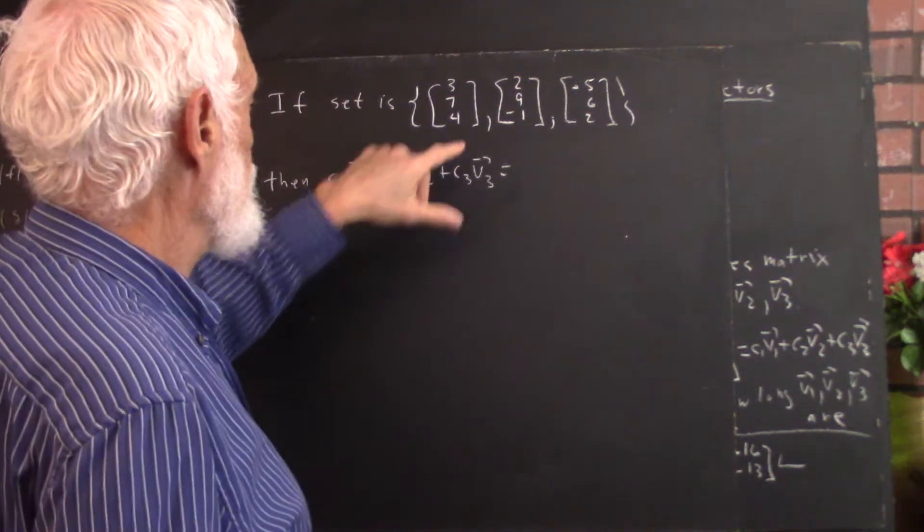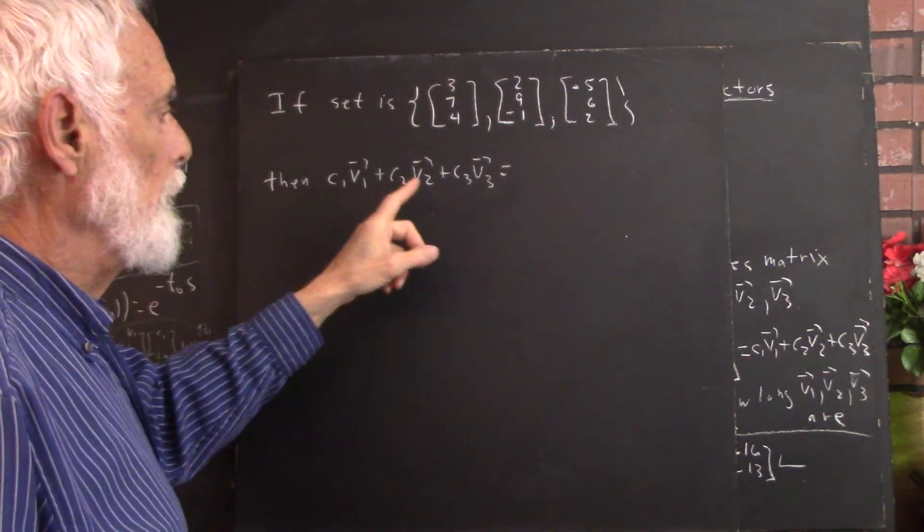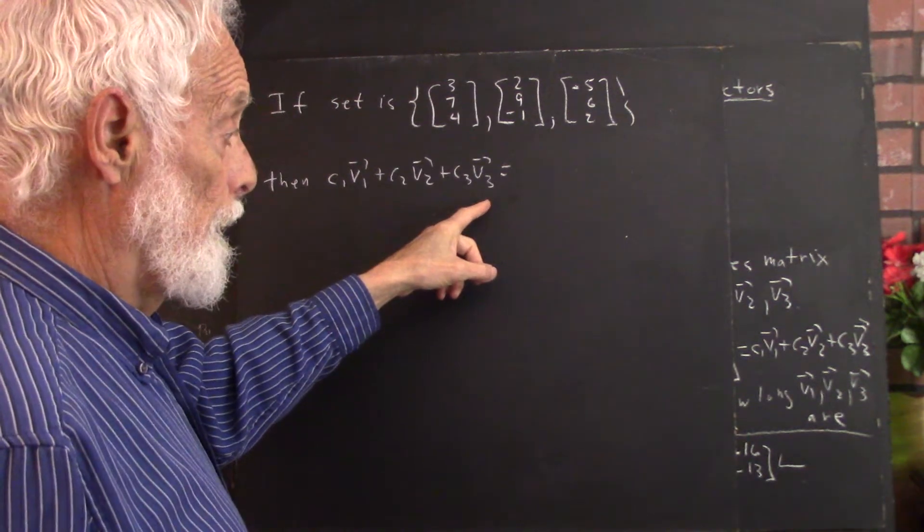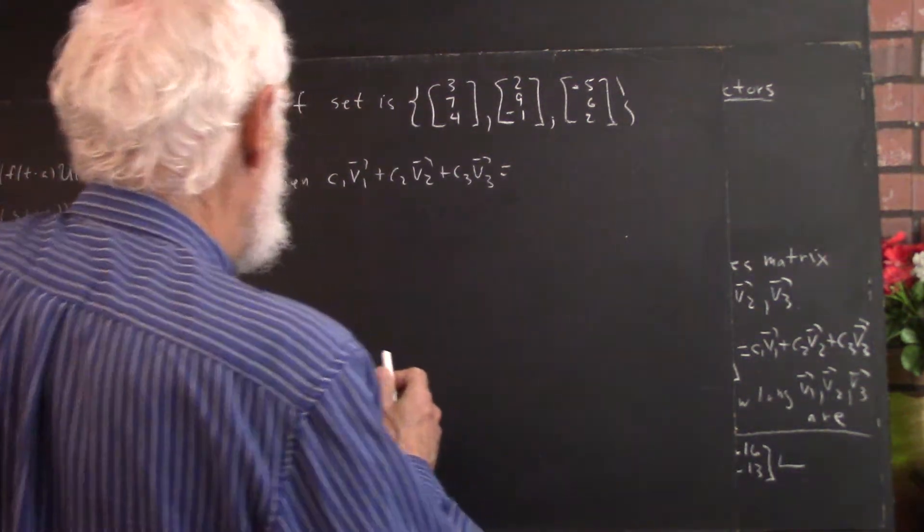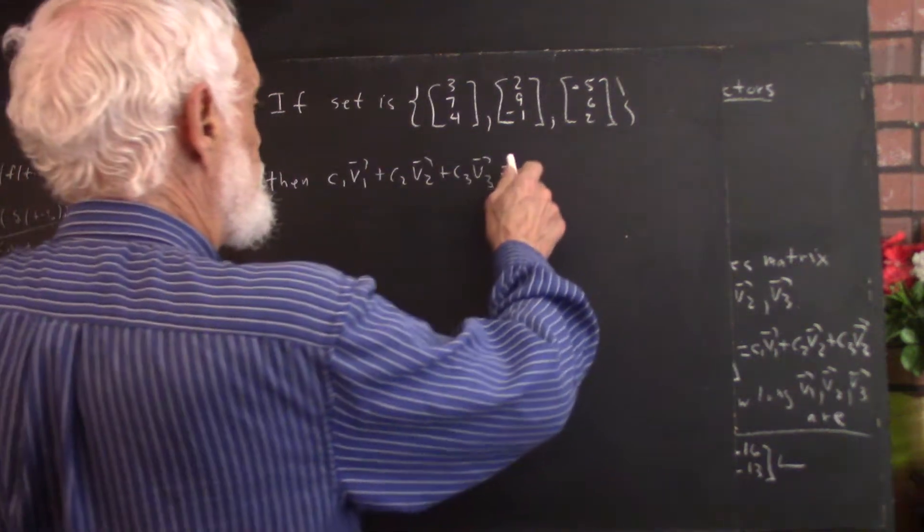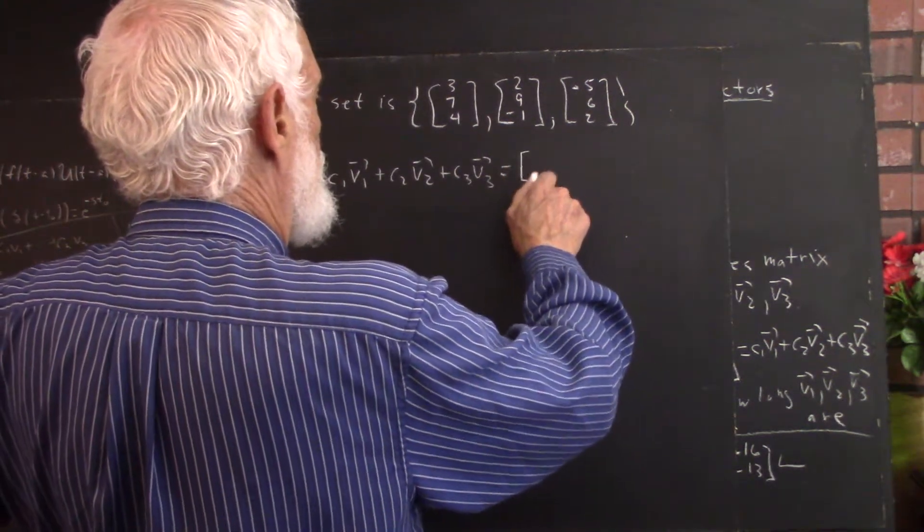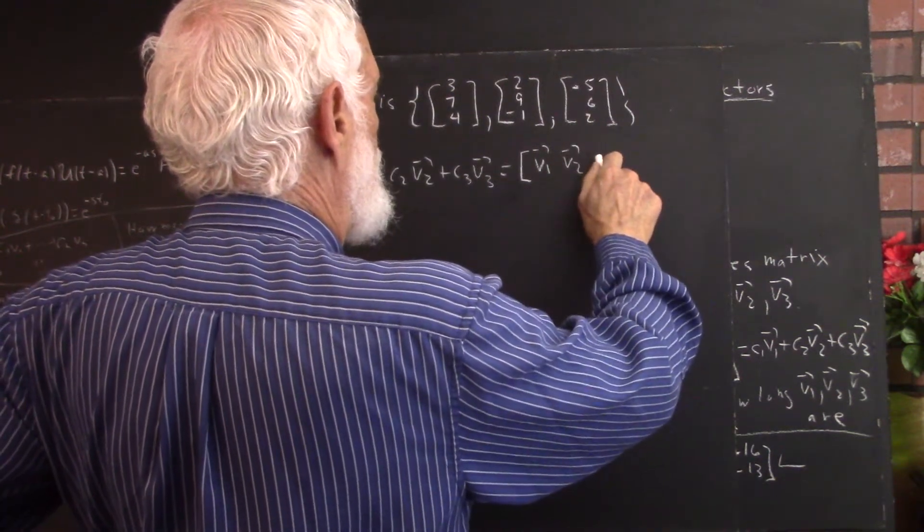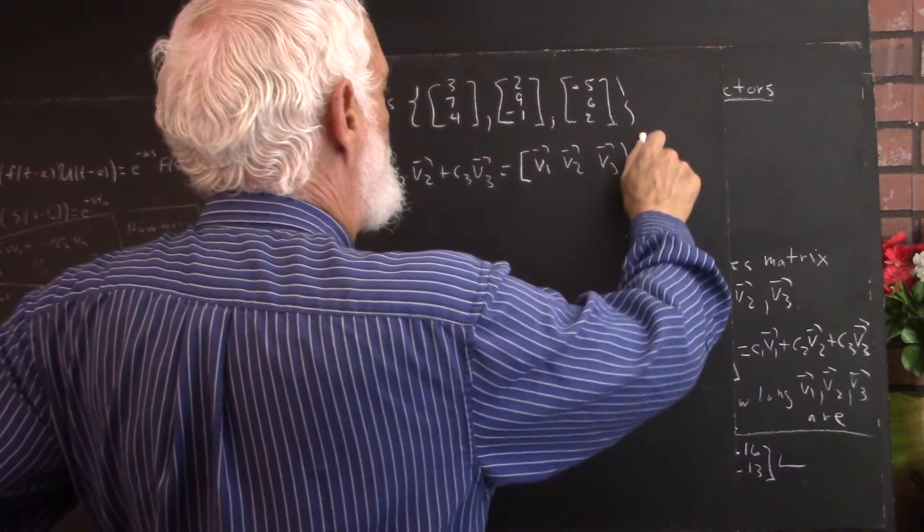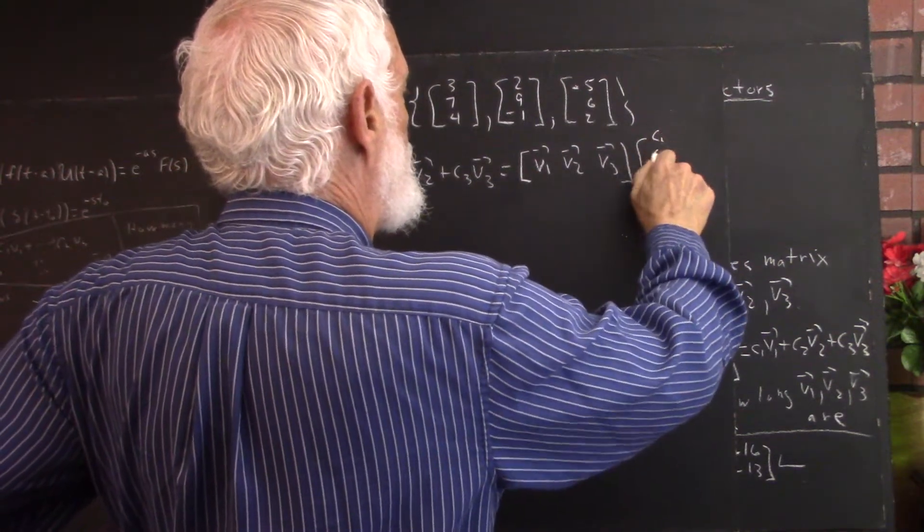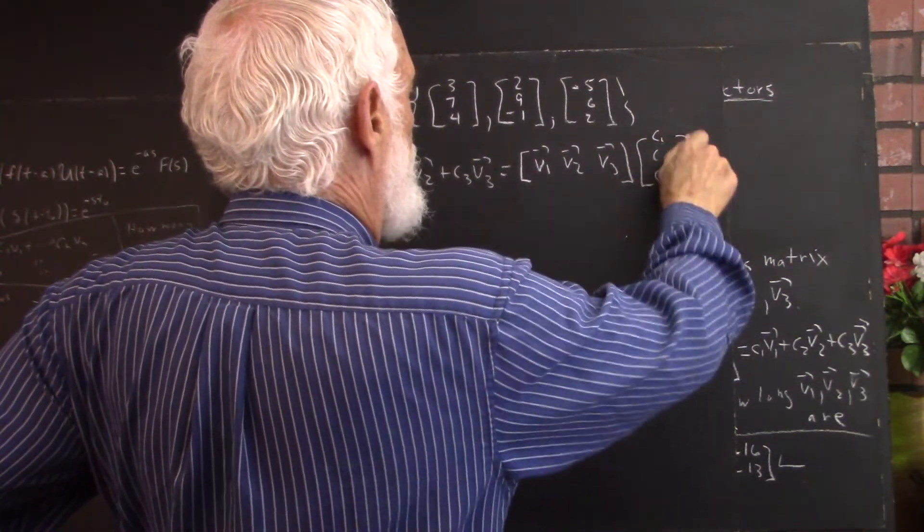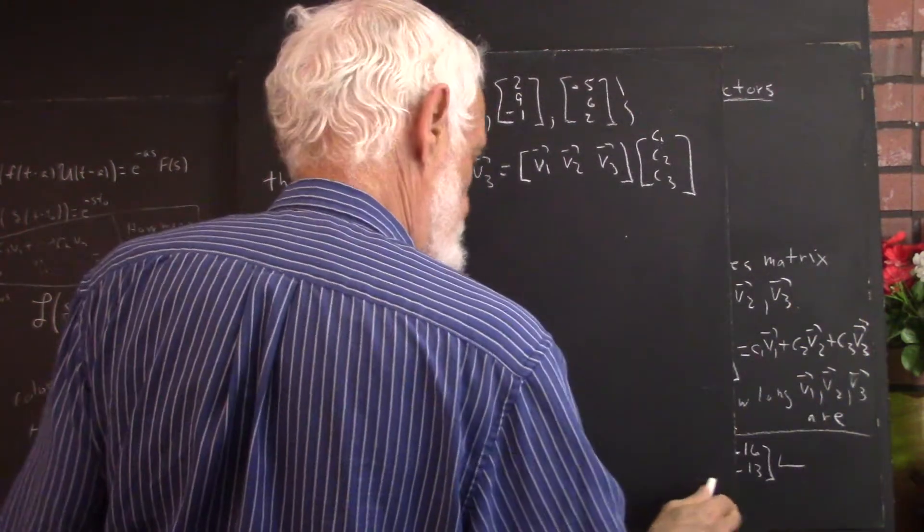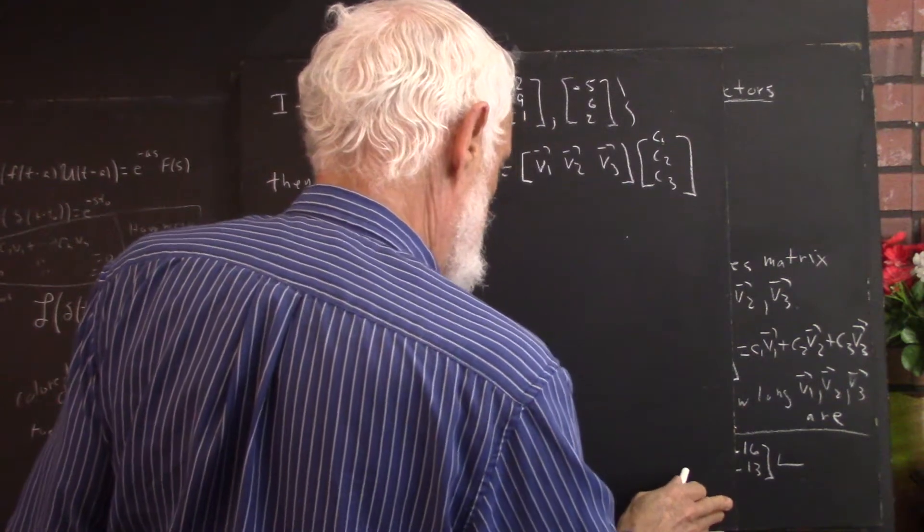Now, of the three vectors, well, you see them here, we're going to do c1*v1 + c2*v2 + c3*v3. That's going to equal, well, if we follow our pattern from before, that should equal this. Let's write it out and firm things up here just a little.